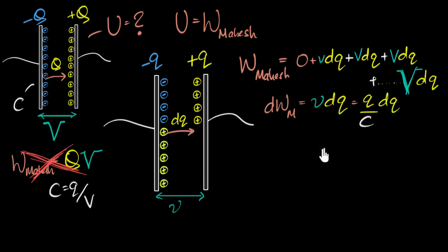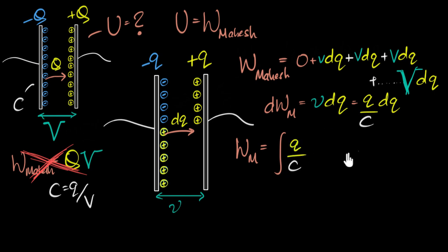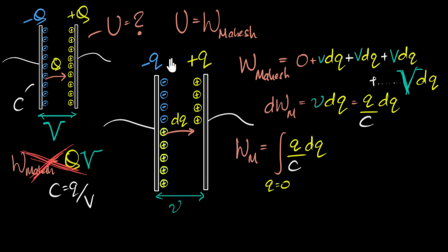That's the tiny amount of work done in transferring a small charge DQ. To calculate the total work done, we integrate this expression. The total work done equals the integral of (Q/C)·DQ from Q equals zero to Q equals capital Q. This is the last step — pause and see if you can evaluate this integral yourself.